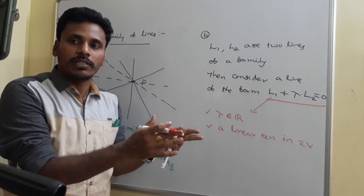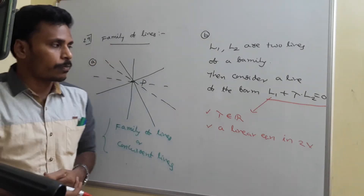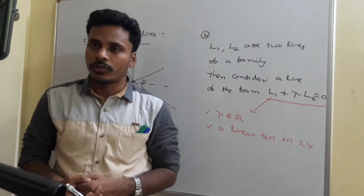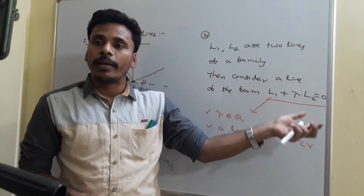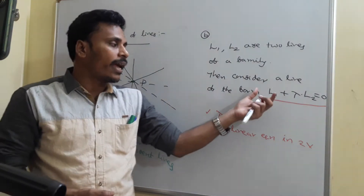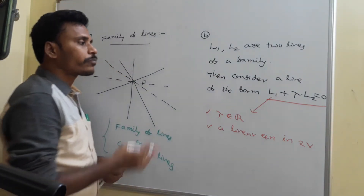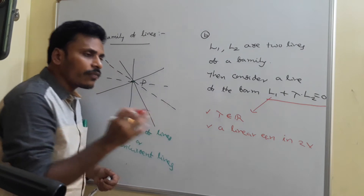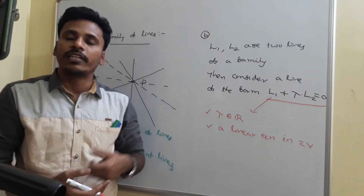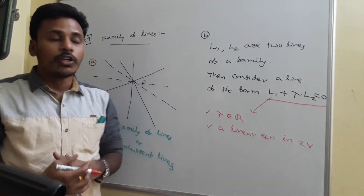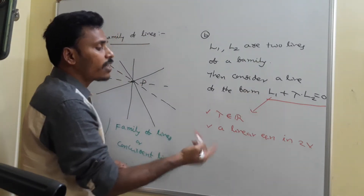L1 plus lambda times L2: A1x plus B1y plus C1 plus lambda times A2x plus B2y plus C2 equals 0. So one linear equation plus lambda times another linear equation directly represents again a linear equation in two variables, and every linear equation in two variables for sure represents a line — already discussed in the first point.